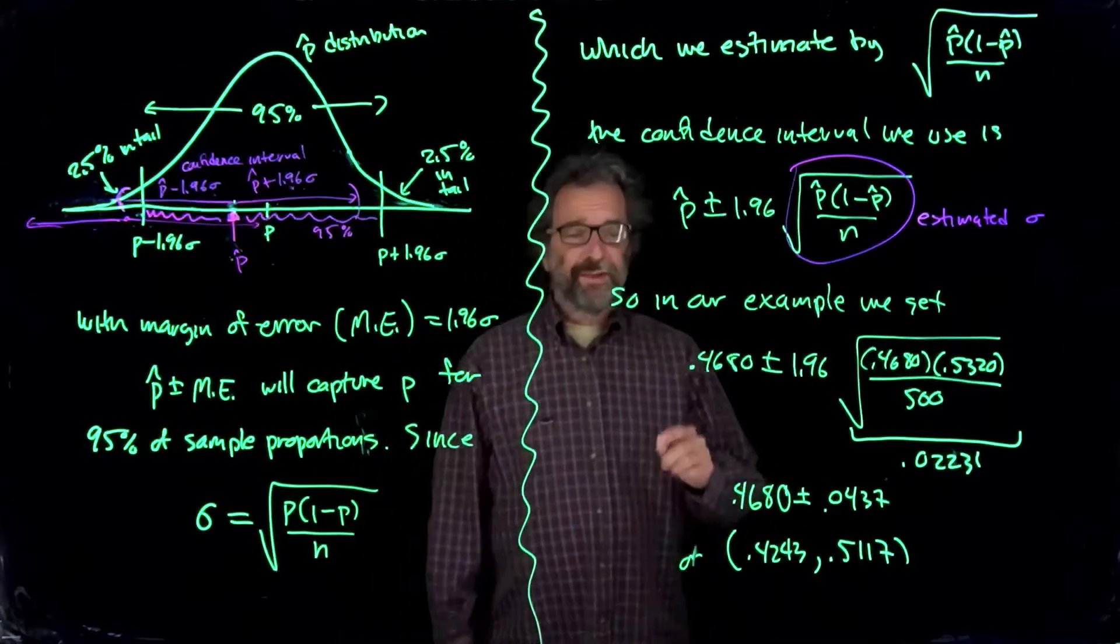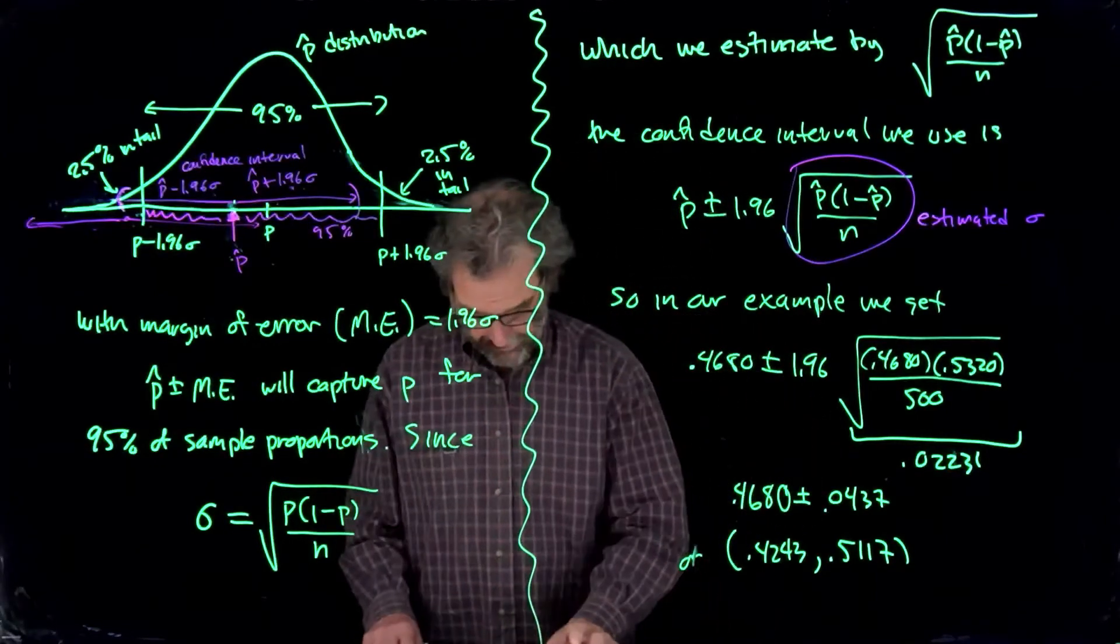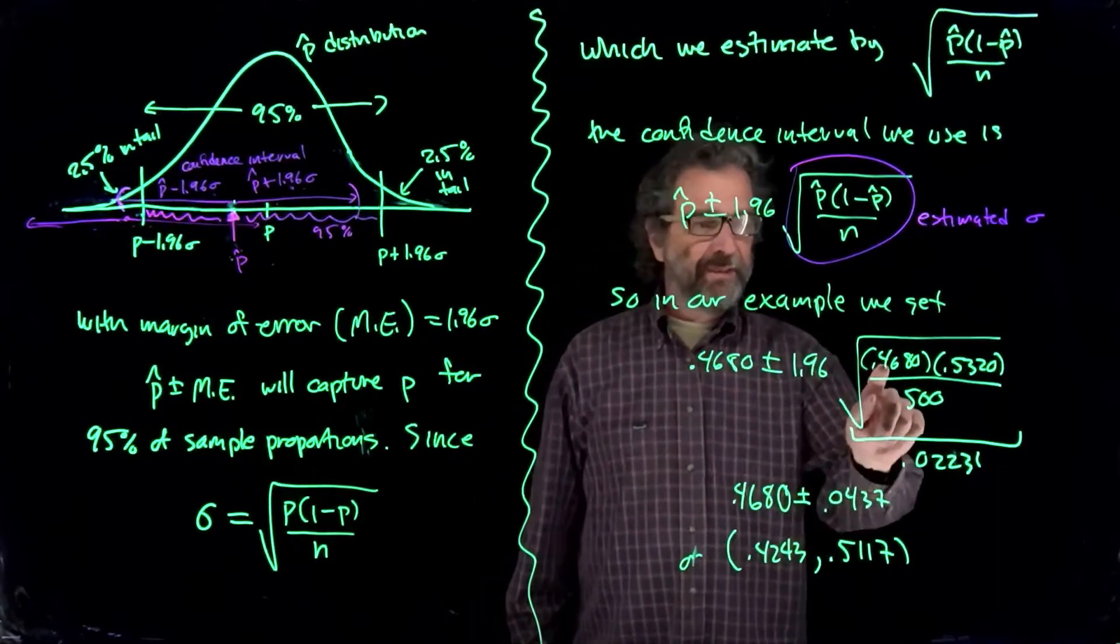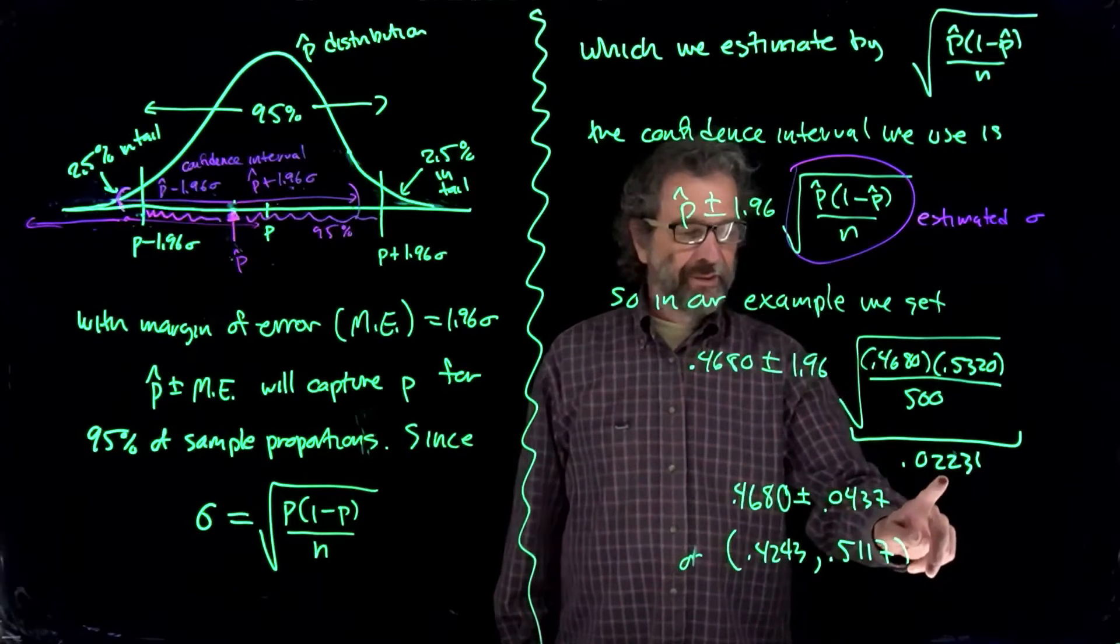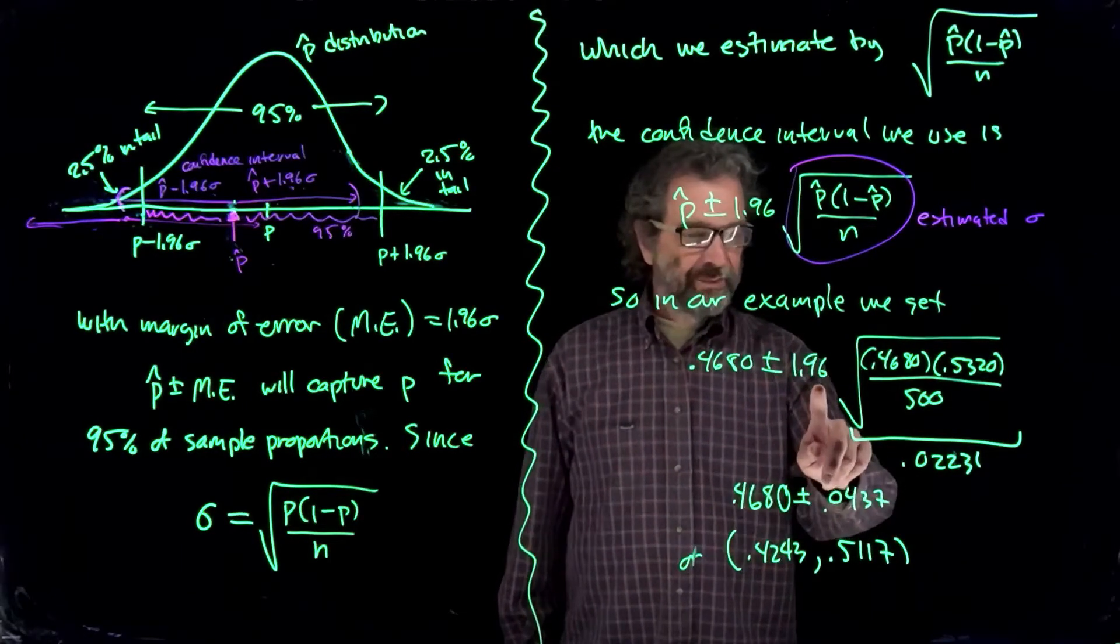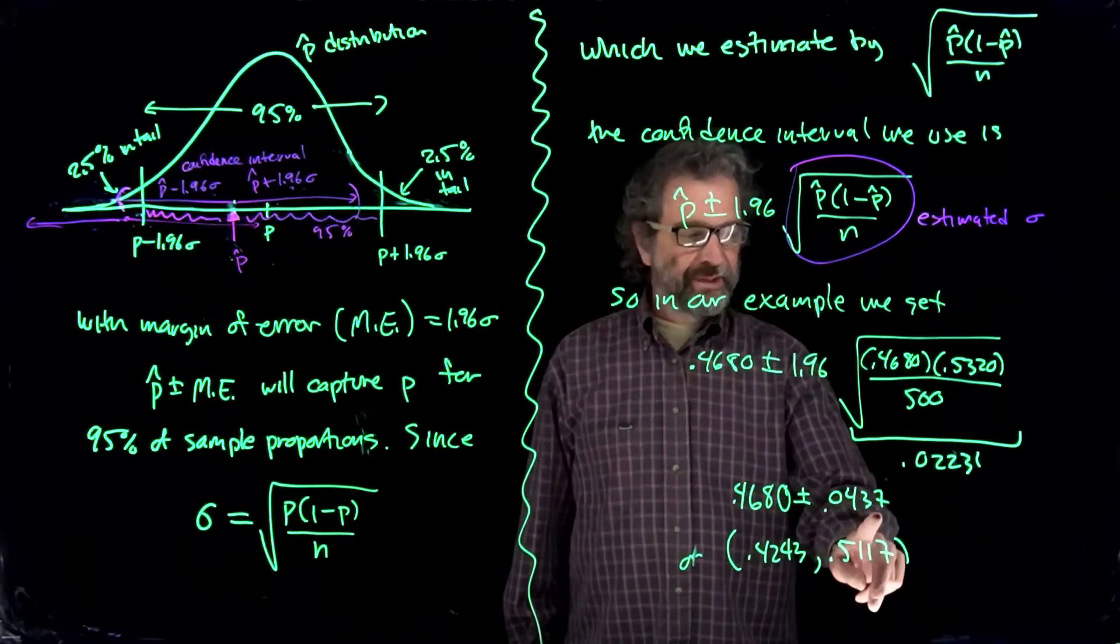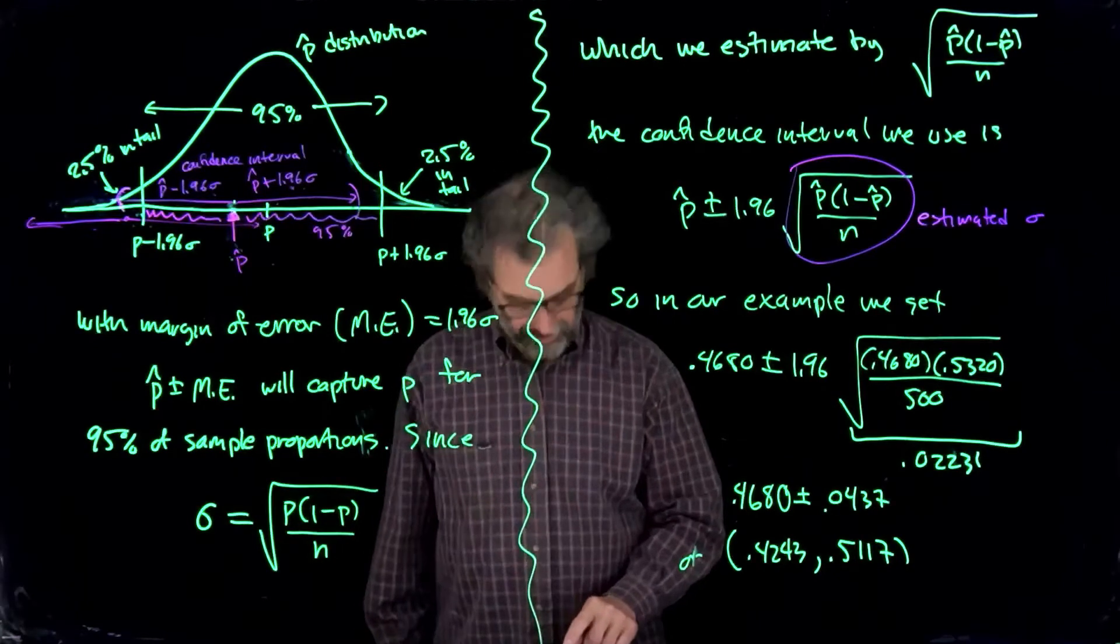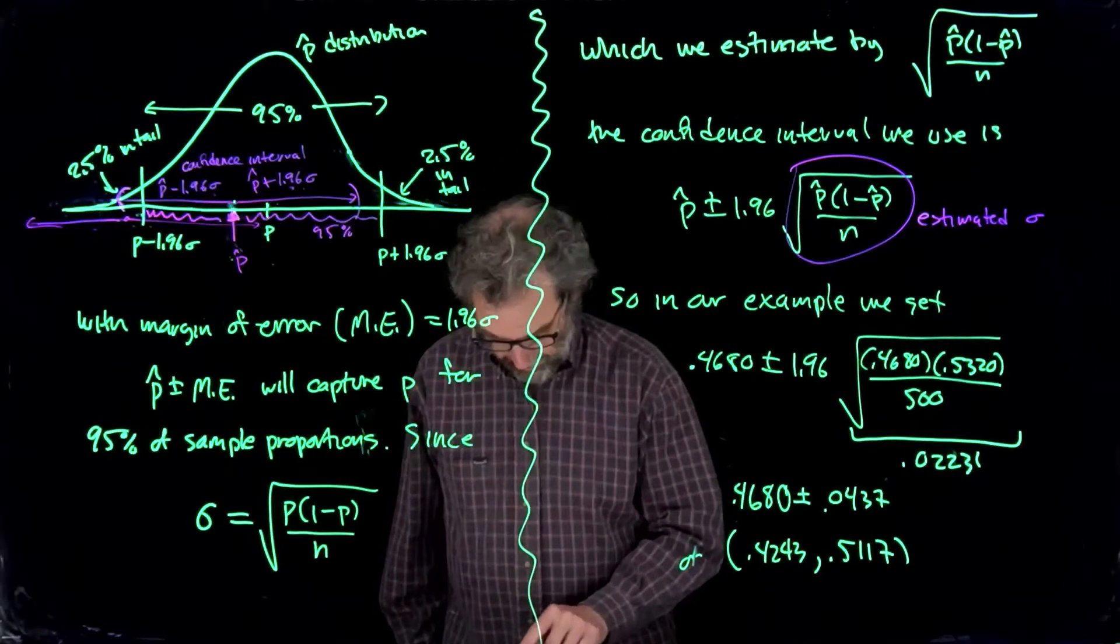So in our example, when we compute that, we get 0.4680, plus or minus 1.96. Then we put p hat, 1 minus p hat over n, which was 500. That comes out 0.02231 times 1.96, just about 2, a little bit less. 0.0437, let me look at that. That feels like it might be 0.02231 times 1.96.